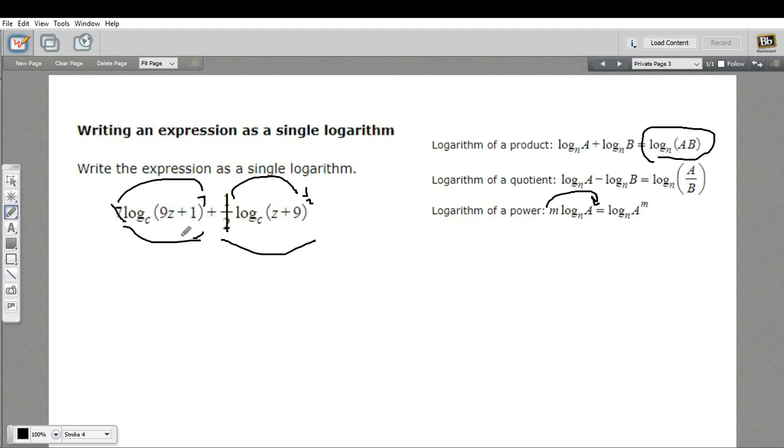Now we can just take those two pieces and multiply them together. So this whole expression is going to be the log base c of this times this. So I'm just going to put all of that in parentheses and then we'll have some parentheses inside there. So first we've got 9z plus one, and that is to the seventh power. And that's multiplied by z plus 9 to the one half power.